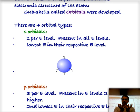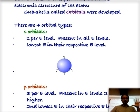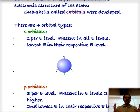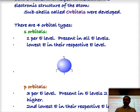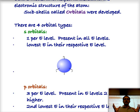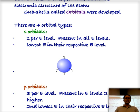S orbitals are spherical in shape — they look like a little ball. They're not perfectly defined because it's a probability, so they're more like a cloud, not particularly well-defined — that's exactly how the atom is, just those electron clouds. S orbitals are present in every energy level in an atom. There is one S orbital per energy level, and they contain the lowest amount of energy — the lowest energy sub-level in their particular energy level.